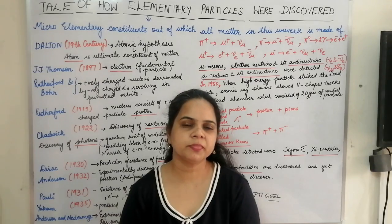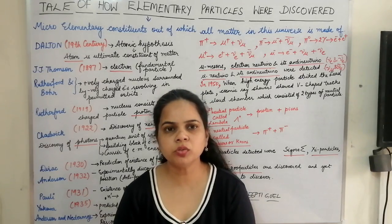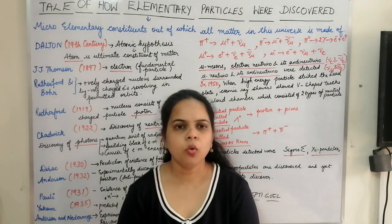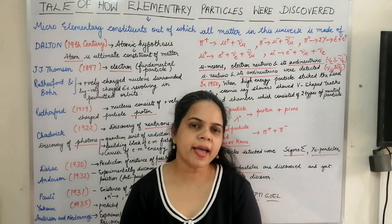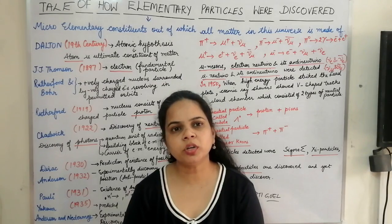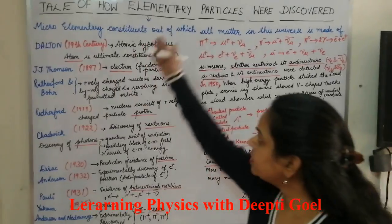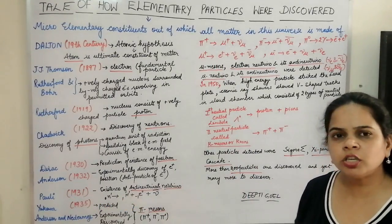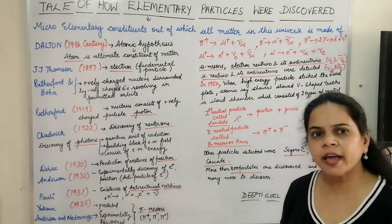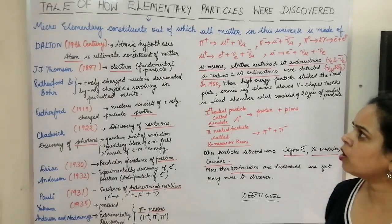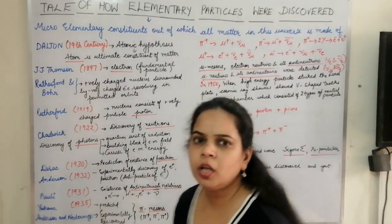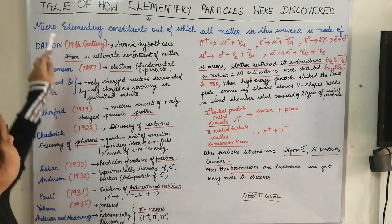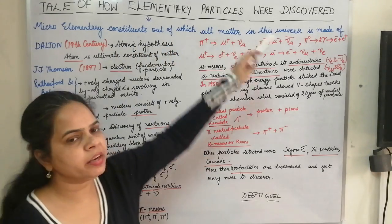Welcome to a new session. Today we are going to discuss elementary particles: what they are, how they were discovered, what is the history and tale behind their discovery, and their properties. Elementary particles are the microscopic elementary constituents that are not visible through the naked eye — they are microscopic elementary constituents out of which all matter in the universe is made up of.